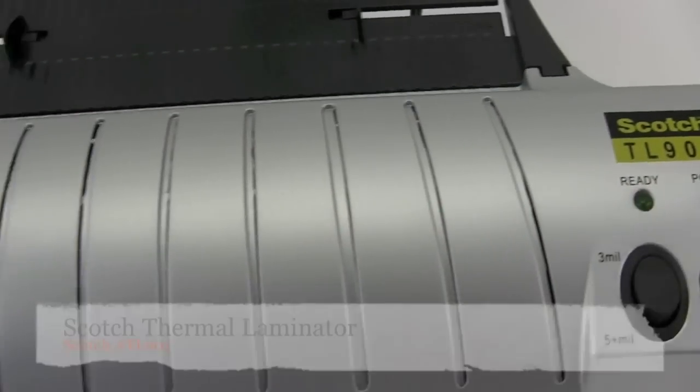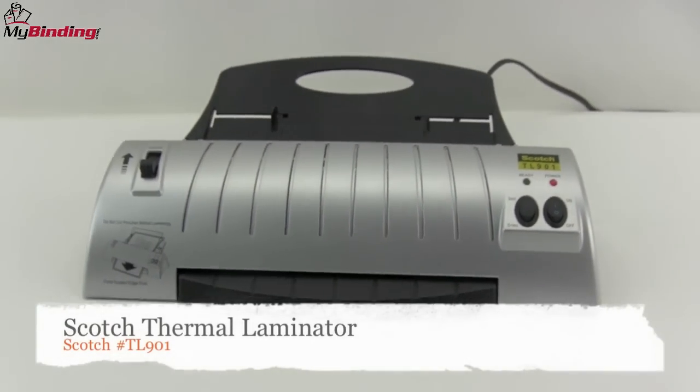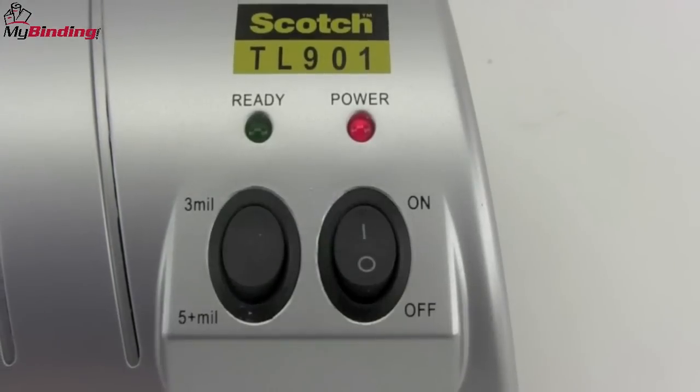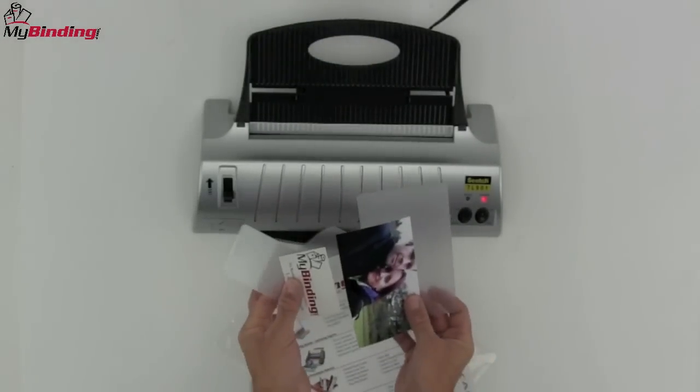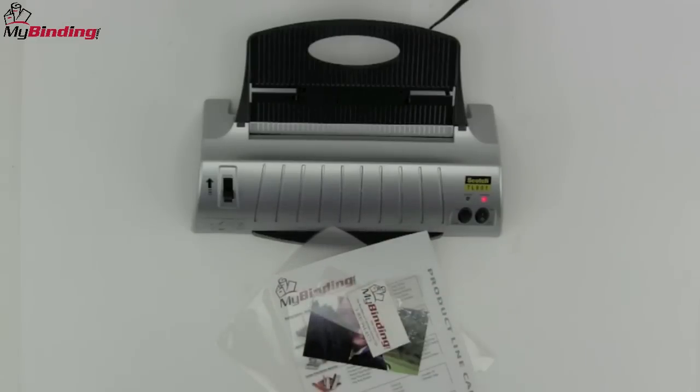Welcome to a MyBinding video. Today we look at the Scotch TL901, a personal thermal laminator. This laminator is as good as it is simple and straightforward. It utilizes a laminating pouch without a carrier and can work up to 3 or 5 mil in pouch thickness.